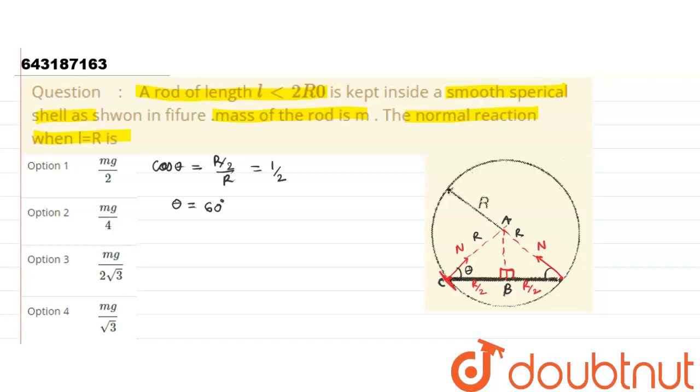Again, this theta will be the same as this theta due to symmetry. Now let us write down the components of this normal. In the upward direction, the component of normal is N sin θ, and again for this, it is N sin θ.